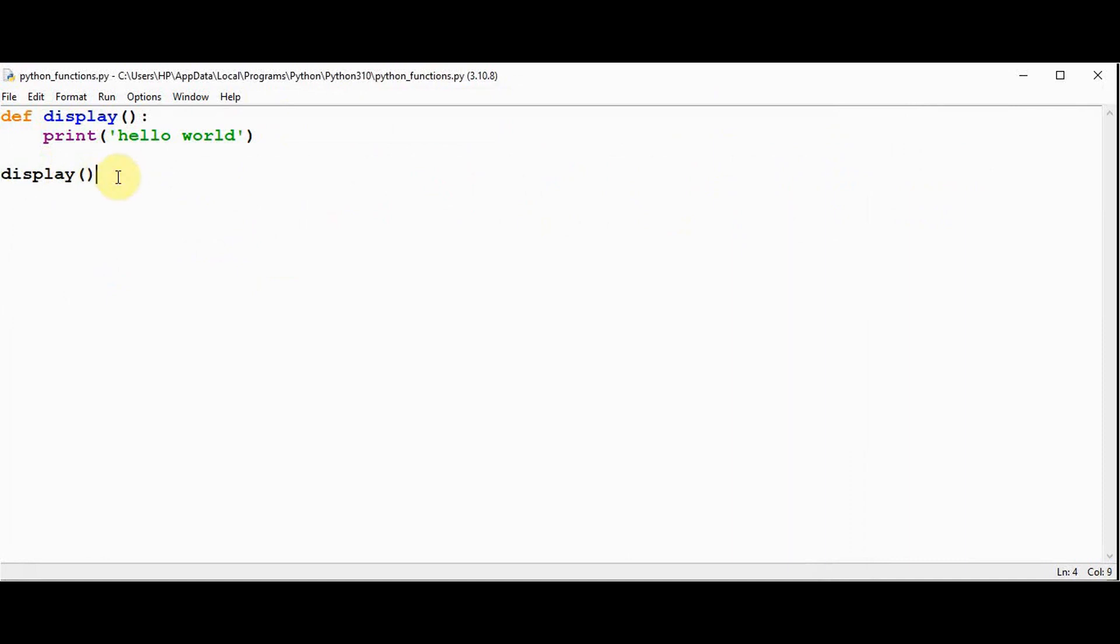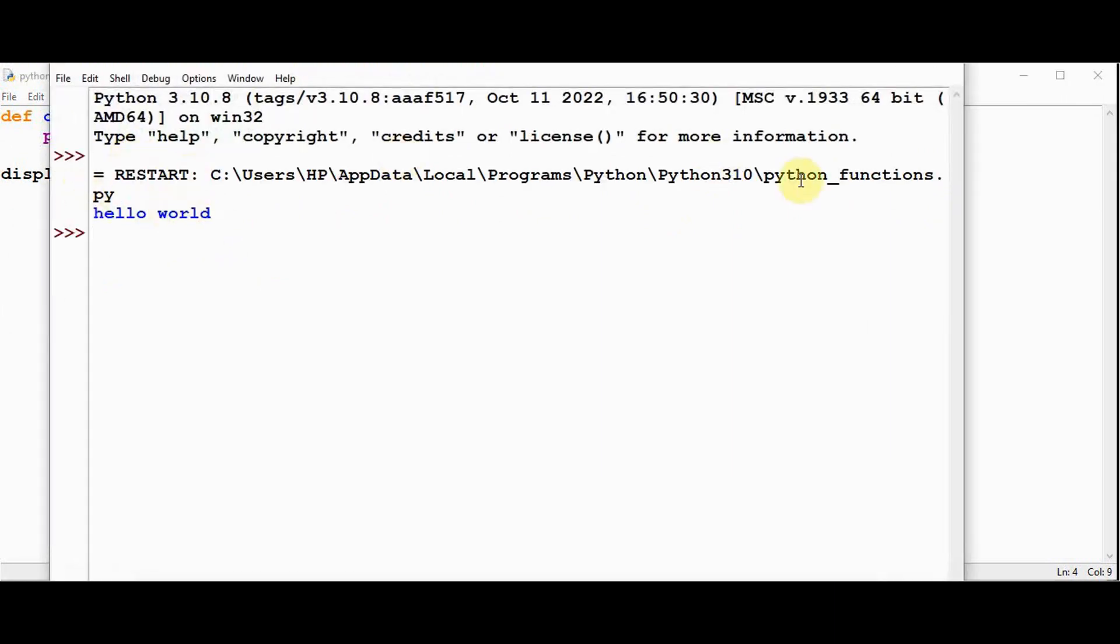We can remove this None by removing this print here. You can simply call the function. You are using a print statement inside the function. So when we execute it now, you will just get the hello world alone as the output.